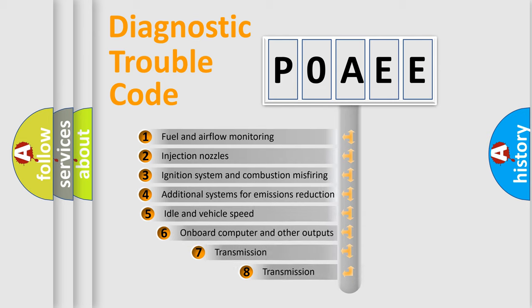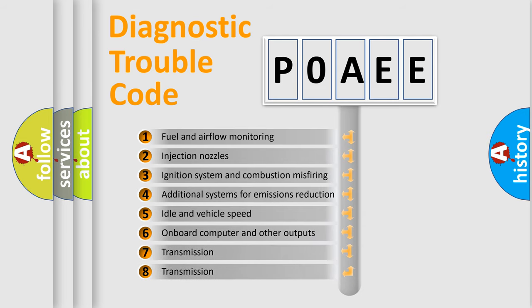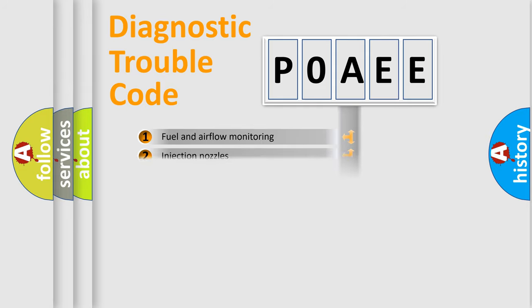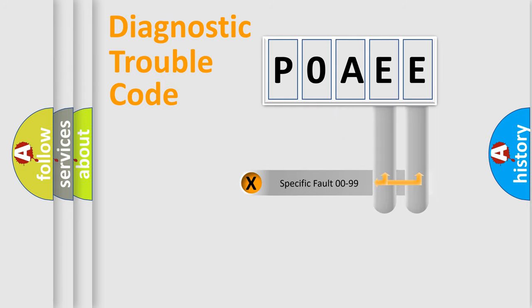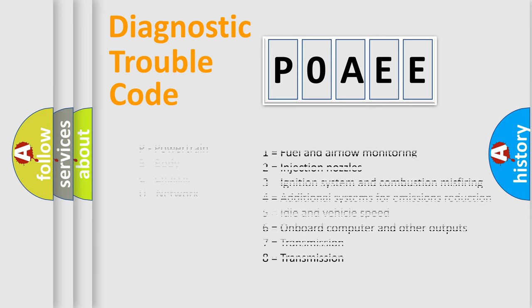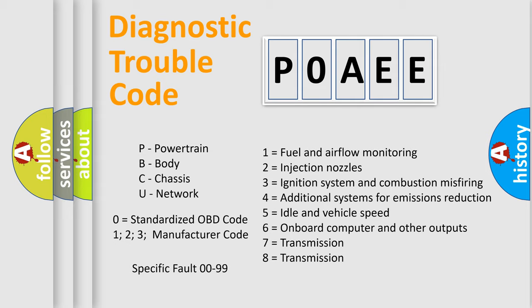The third character specifies a subset of errors. The distribution shown is valid only for the standardized DTC code. Only the last two characters define the specific fault of the group. Let's not forget that such a division is valid only if the second character code is expressed by the number zero.